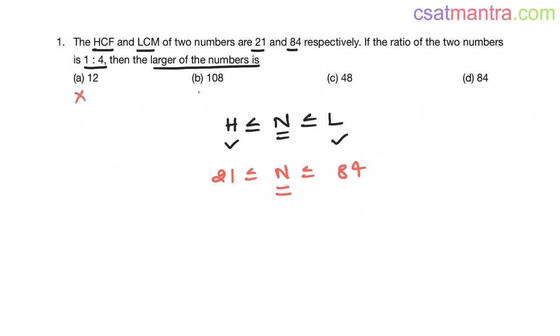Strictly eliminate option A and B because they are not between 21 and 84. Our HCF is 21. Between C and D, which one is the multiple of 21? C is not multiple of 21. Here D is the multiple of 21.